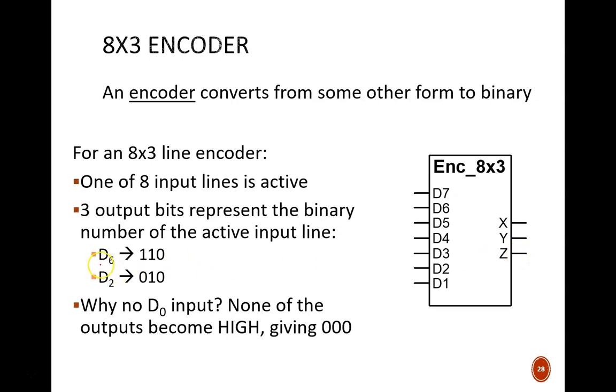if d6 is active, then the output will be 1, 1, 0. Similarly, if d2 is active, then the output will be 0, 1, 0.